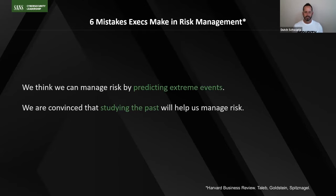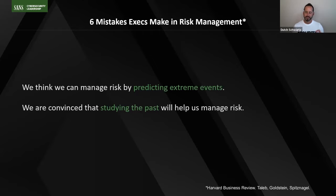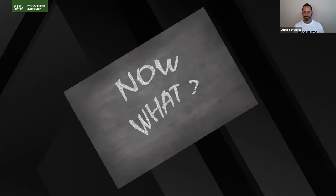The first is predicting extreme events — we spend a lot of time thinking about extreme situations, but if it's a black swan scenario, you really can't predict that event. The second related one is: studying the past will help us manage risk. According to Taleb and co-authors, these are two mistakes frequently made by executives. That leaves us with the question: if we can't predict it in advance, and studying the past isn't really helpful in a deep way, so what do we do?